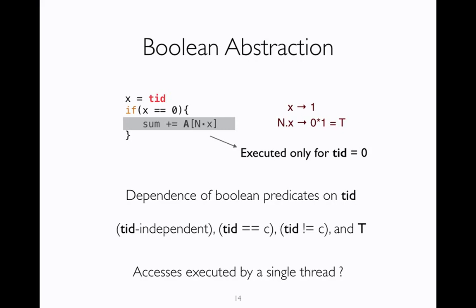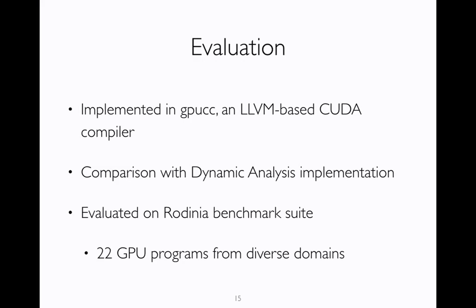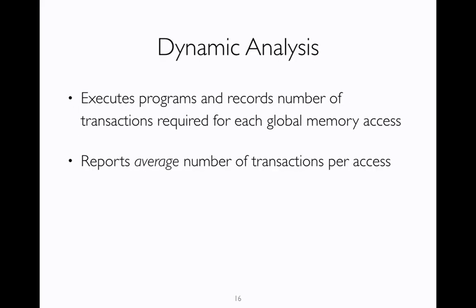So this is the analysis in a nutshell. Now let's see how the analysis performs. We have implemented Draeno in GPUCC, which is an open source LLVM-based CUDA compiler. We compared it against a dynamic analysis implementation and evaluated it on a popular benchmark suite of GPU programs called Rodinia. The dynamic analysis implementation essentially executes the program for a specific input and records the number of transactions that are required for each global memory access. Then it reports the average number of transactions that are required per access. The reason we have an average is because a static access might be executed multiple times because it's probably within a loop.